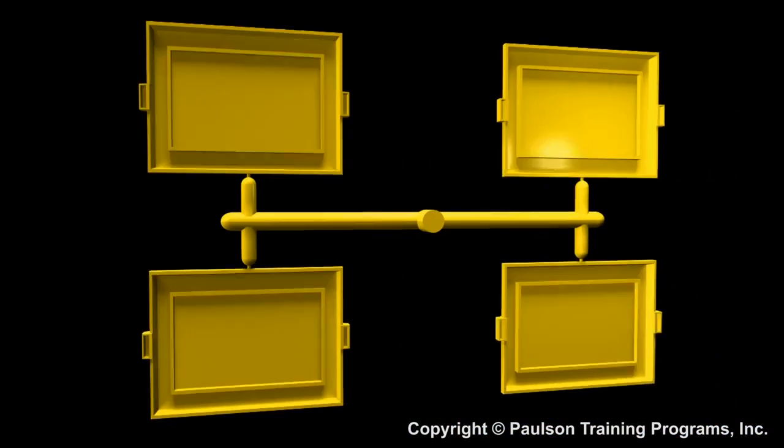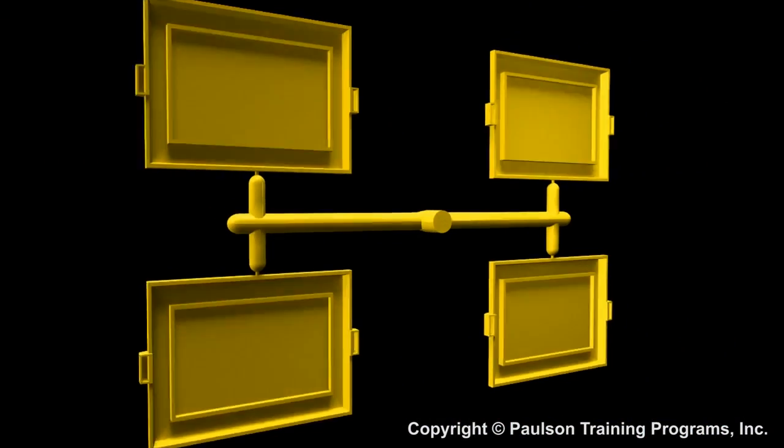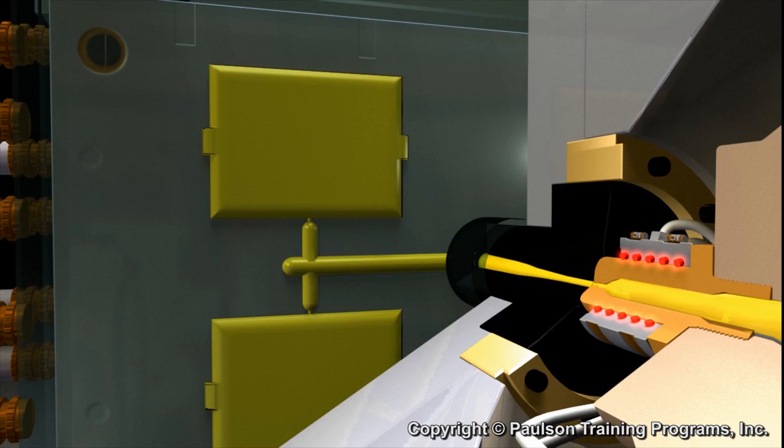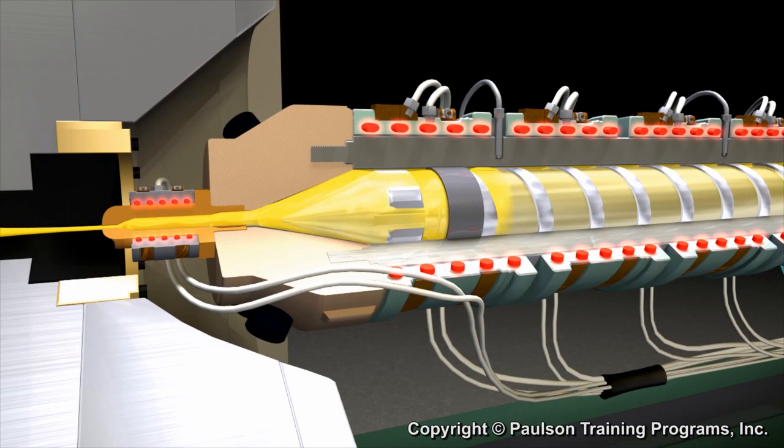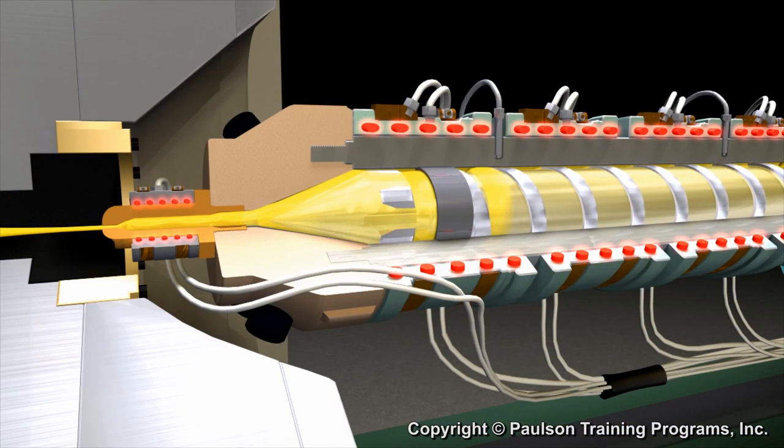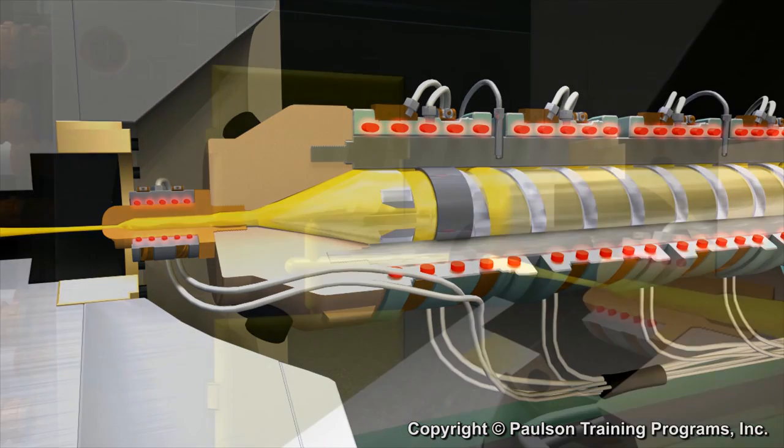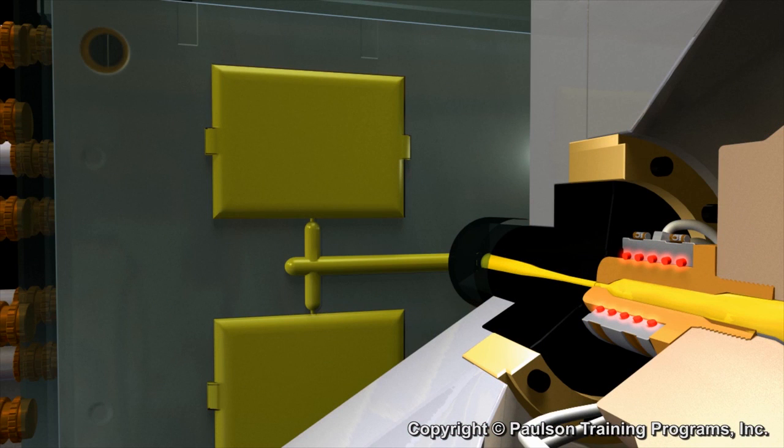After the cavity's filled to 90 to 95 percent of volume, a little more plastic is forced in. This is called the packing phase of the process. Packing compresses additional plastic into the cavity. The screw is held forward under pressure until the plastic in the gates freezes, trapping the plastic inside the cavities.